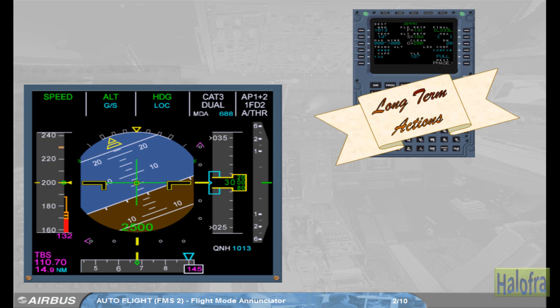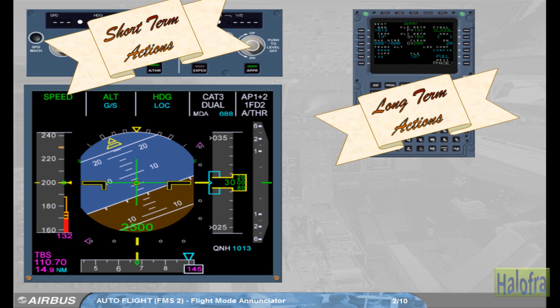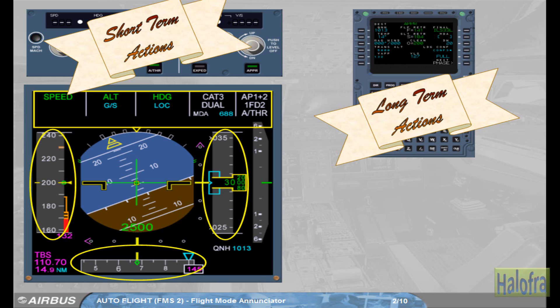Long-term actions through the MCDU and short-term actions through the FCU must be cross-checked on the Flight Mode Annunciator, FMA, located at the top of the PFD, as well as on the various scales of the PFD. The Guidance Mode Engagement Arm status and their associated guidance targets are provided on the FMA and PFD scales: Speed, Heading, Altitude.